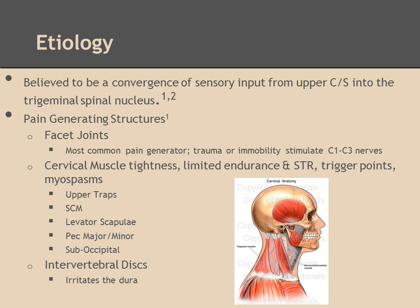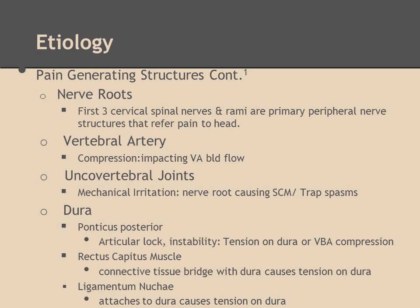The next two slides contain a list of some of the pain-generating structures believed to contribute in some way to cervicogenic headaches. The main contributor is believed to be the facet joint, which are innervated by spinal nerves C1 through C3. The C1 through C3 spinal nerves feed sensory input into the trigeminal nucleus, resulting in a unilateral ram's horn pattern. Other contributing structures are the vertebral arteries, uncovertebral joints, and the dura.